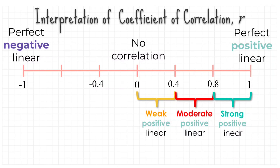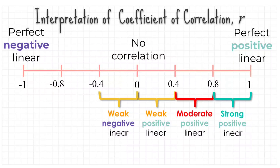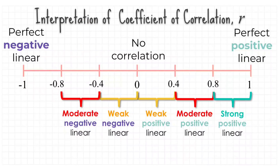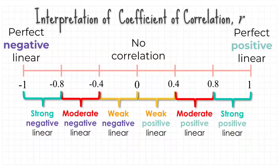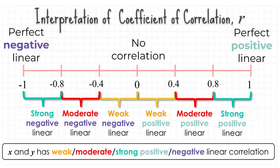If r is between negative 0.4 and 0, this indicates x and y have a weak negative linear correlation. If r is between negative 0.8 and negative 0.4, this indicates x and y have a moderate negative linear correlation. If r is between negative 1 and negative 0.8, this indicates x and y have a strong negative linear correlation. In conclusion, you can use these statements to interpret the coefficient of correlation r.